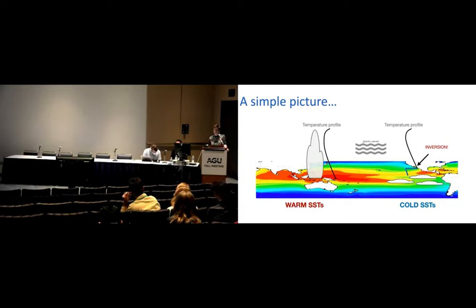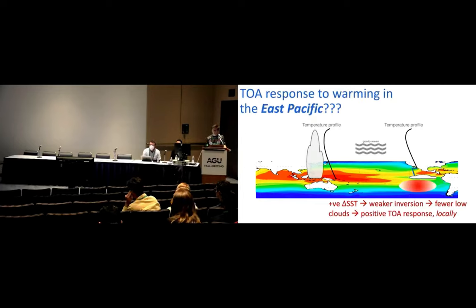So let's take this picture and let's warm in a region of tropical subsidence. So watch the inversion. The inversion weakens. So in this picture where you warm in a region of tropical subsidence, you don't affect the free tropospheric temperature profile. You just warm the boundary layer. That weakens the inversion, causes fewer low clouds, less shortwave reflectance, and that's a positive impact on Earth's TOA.